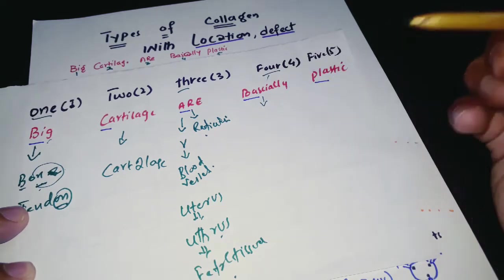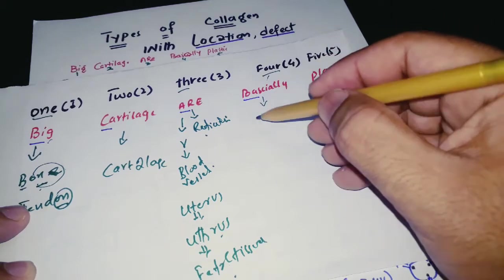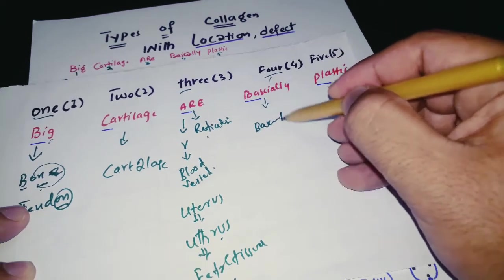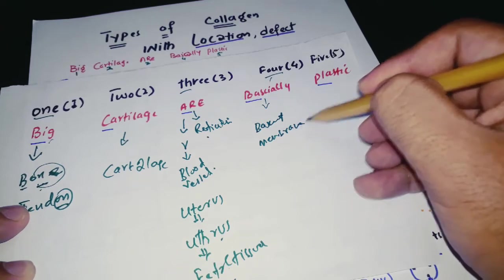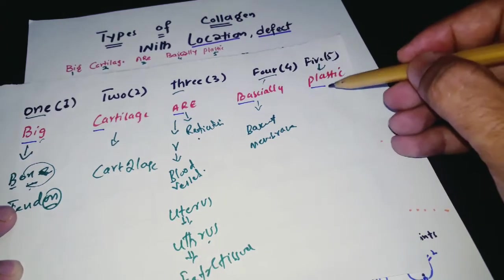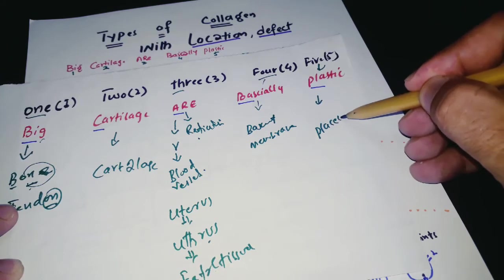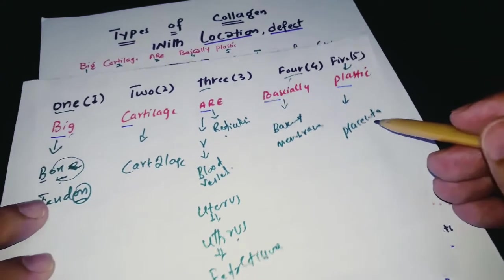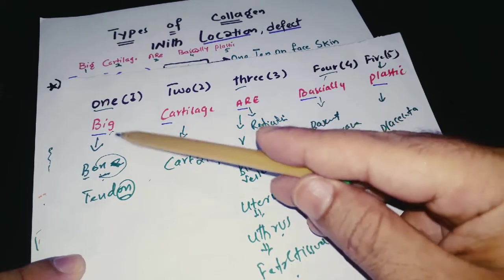From 'Basically,' you get the base — which is the basement membrane — so Type 4 collagen is in the basement membrane. From 'Plastic,' just remember placenta for Type 5.